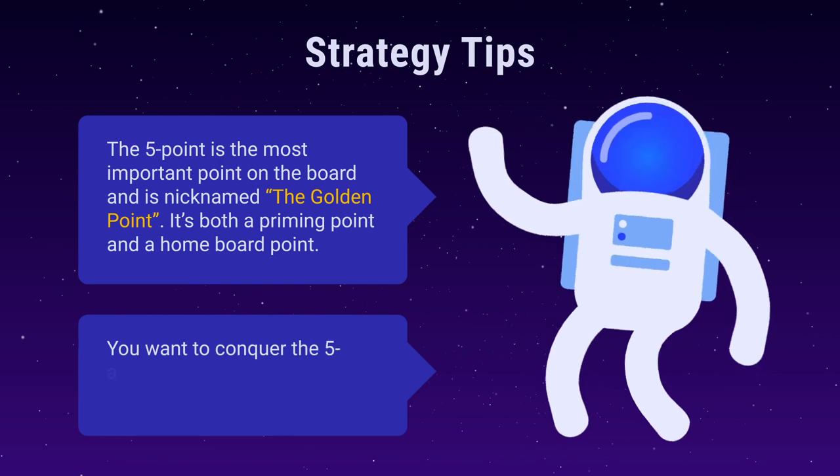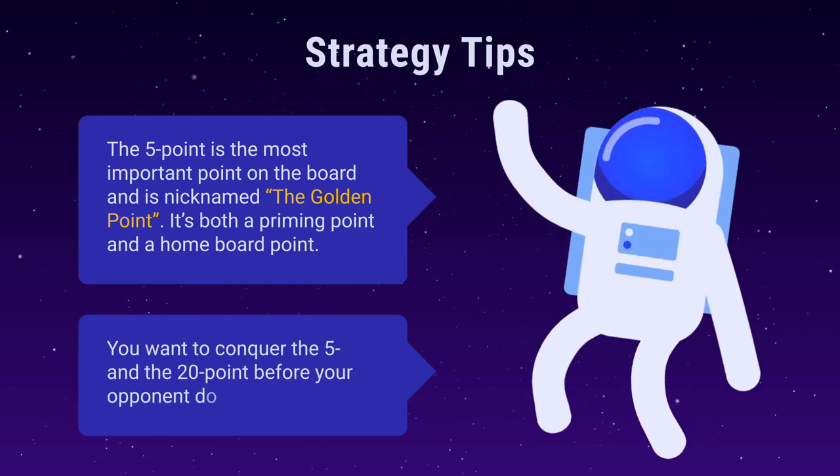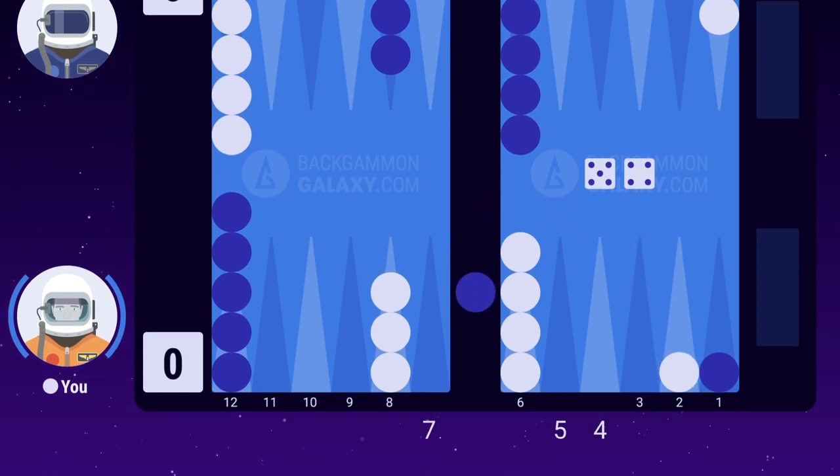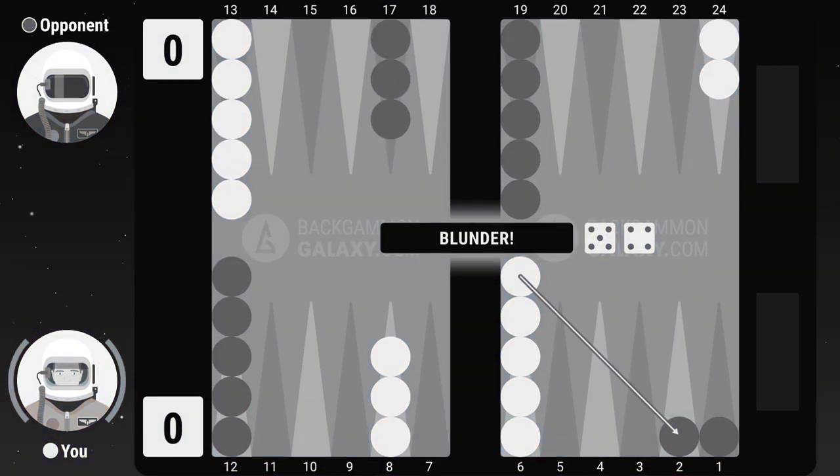You want to conquer the 5 and the 20 point before your opponent does. In this position, you shouldn't hit loose since your opponent is not positioned on any key points. You have no gain from hitting loose on the 2 or the 1 point since they aren't points you want to make in your prime.